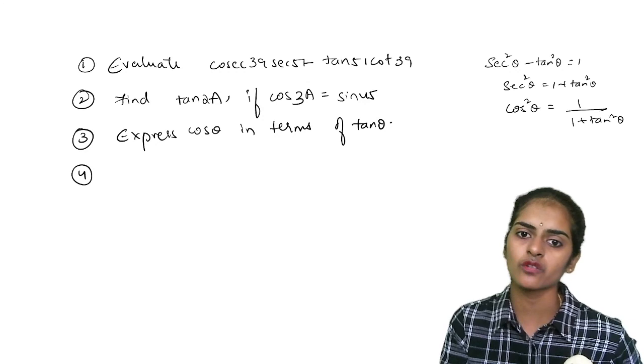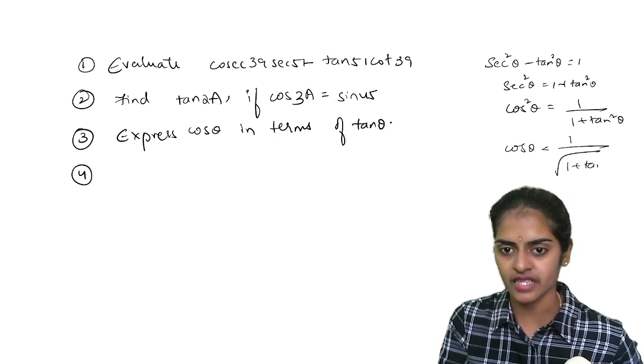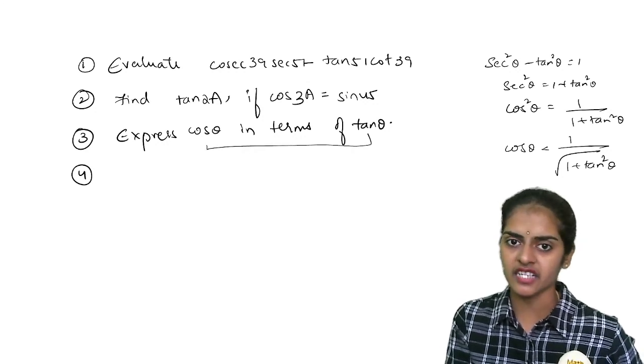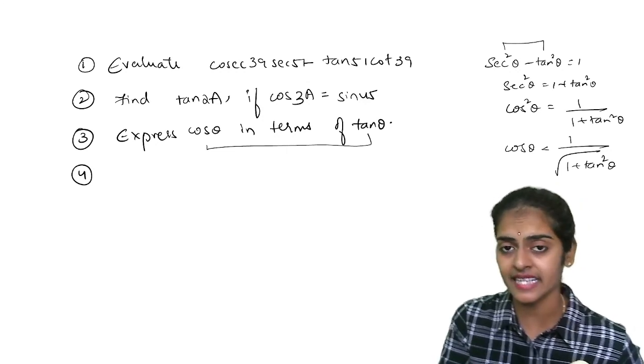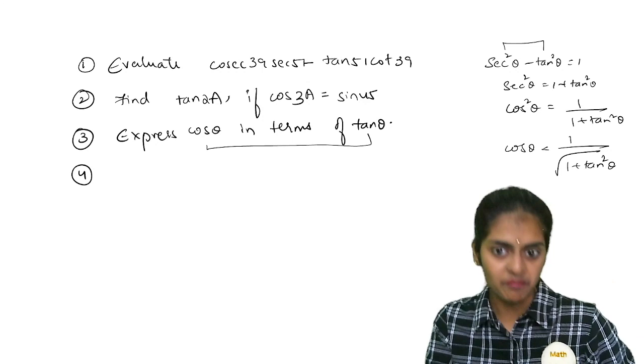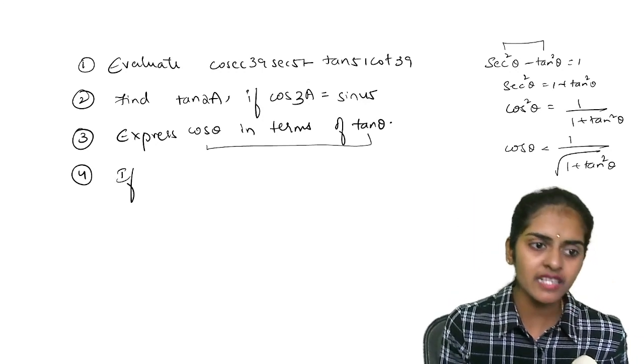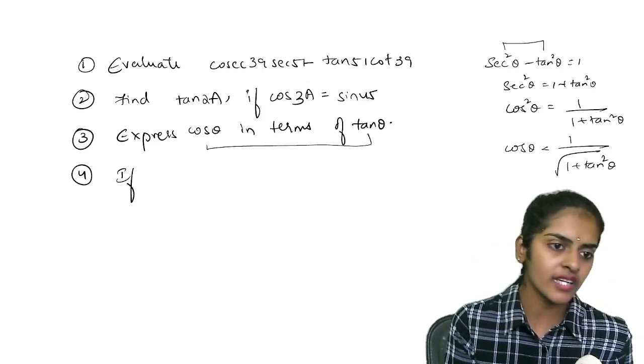So if I reciprocal, I will get cos square theta is 1 by 1 plus tan square theta. Take a root now, so you are writing cos theta equal to 1 by root 1 plus tan square theta. Between cos and tan you need a relation. Directly we don't have one but between secant and tan I have a relation. Write it then reciprocal, so you will get cos.